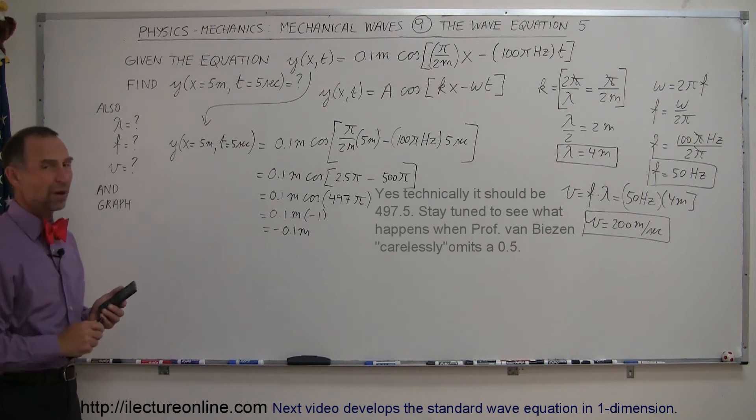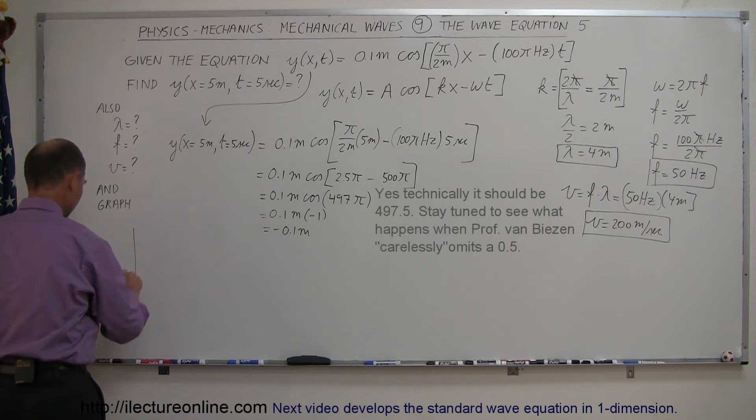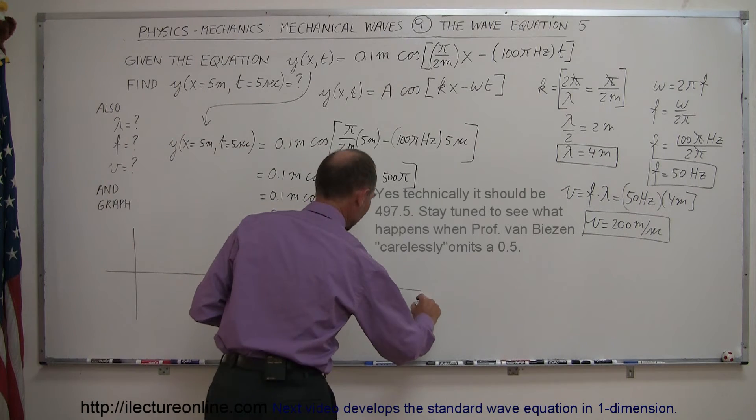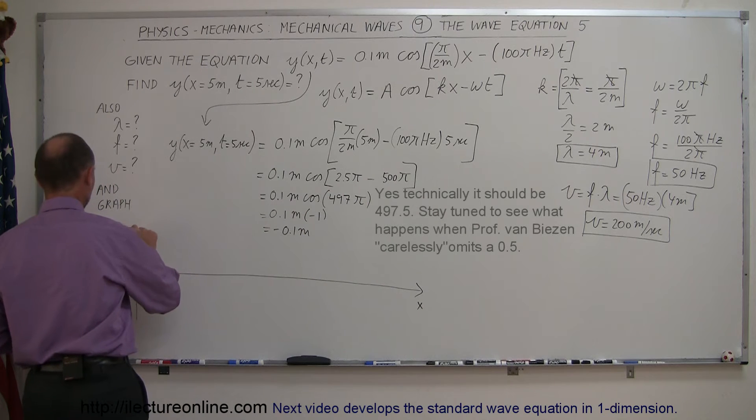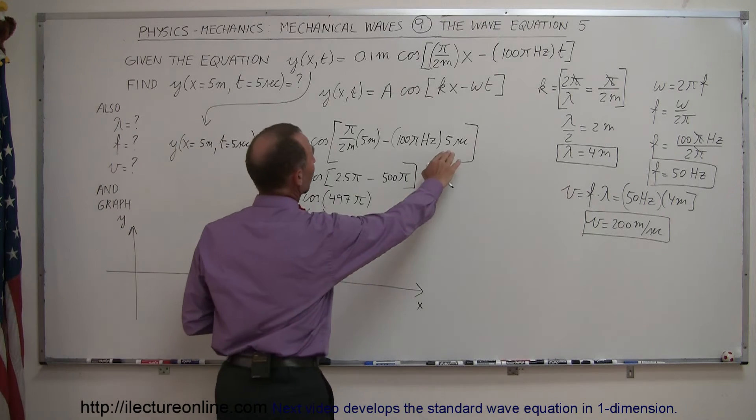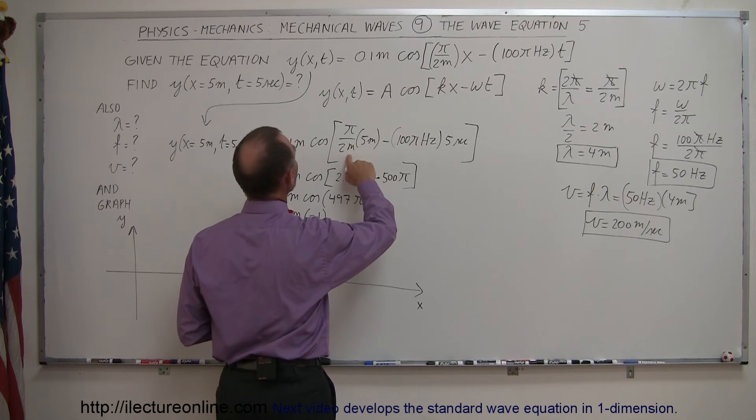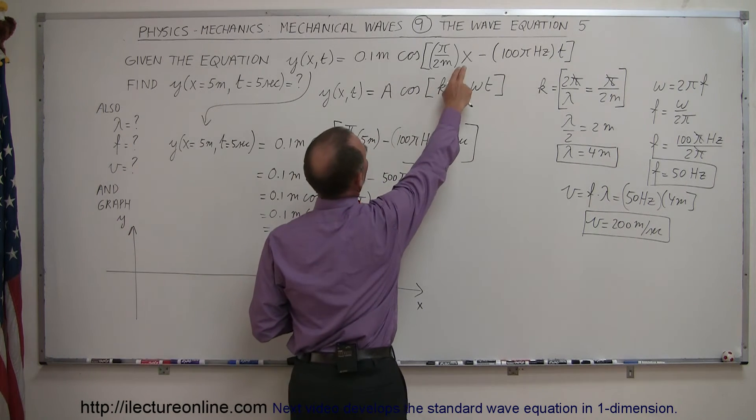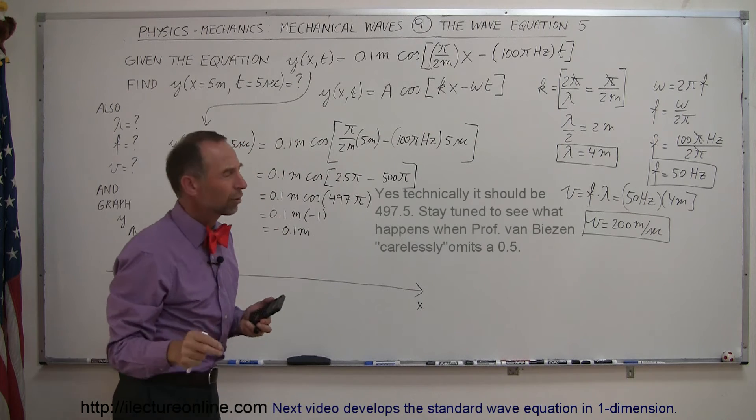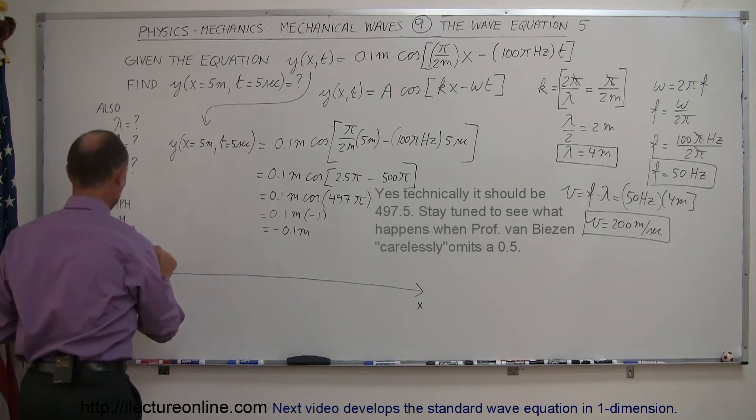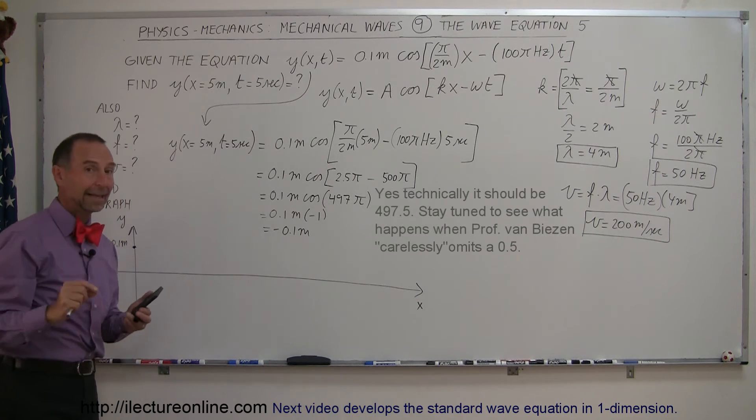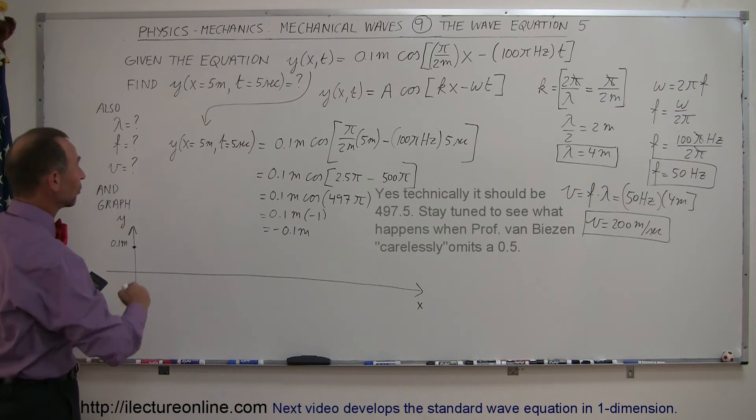Finally, we're supposed to graph this function as well. Here's our vertical and horizontal axis. On our horizontal axis we have the variable x, vertical axis we have the variable y, which describes displacement. When there's no phase angle here, when x equals 0 and t equals 0, the cosine of 0 is 1, and we multiply times the amplitude, we get 0.1 meter. So 0.1 meter is at t equals 0, at x equals 0.